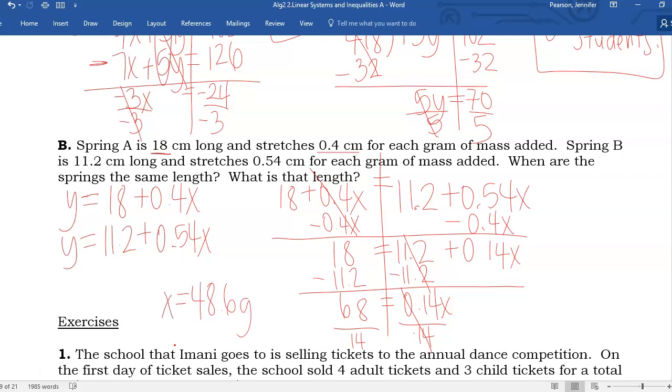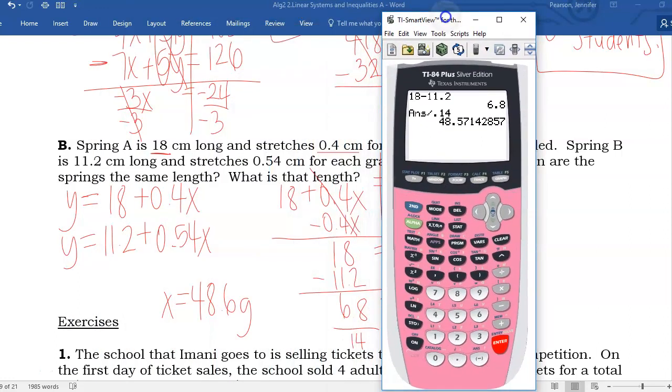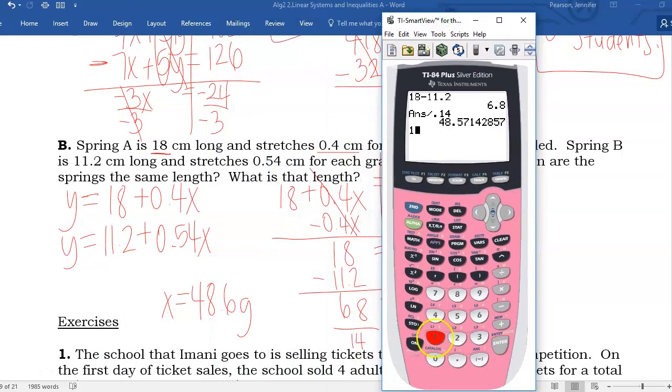When are the springs the same length? They are the same length when 48.6 grams are added to each. And then, what is that length? We need to substitute that back into the X for either equation. We can go top equation. We can go bottom equation. We can do both to check our answer. Now, the thing about this is because we're using a rounded value, we won't get the exact same answer.